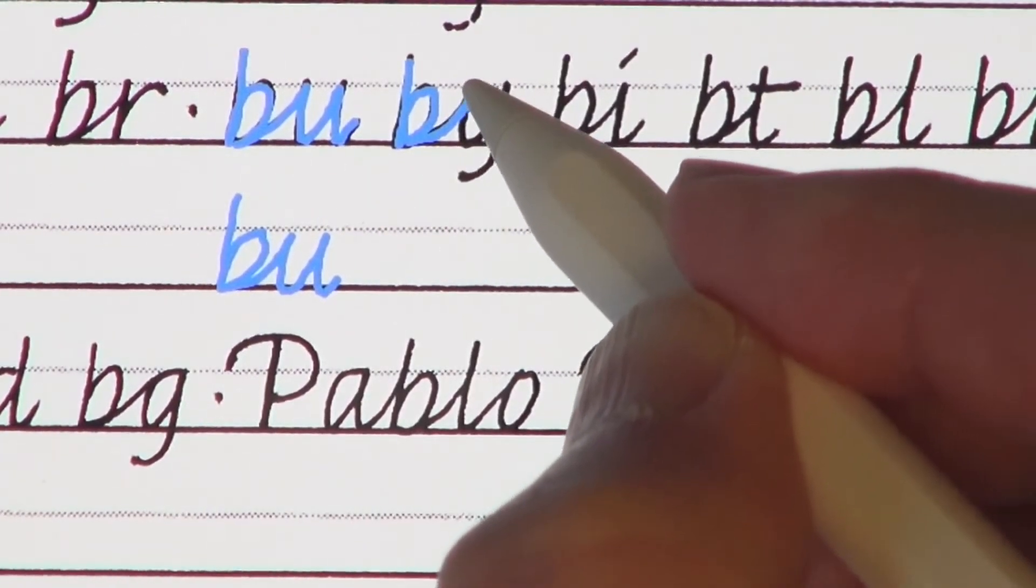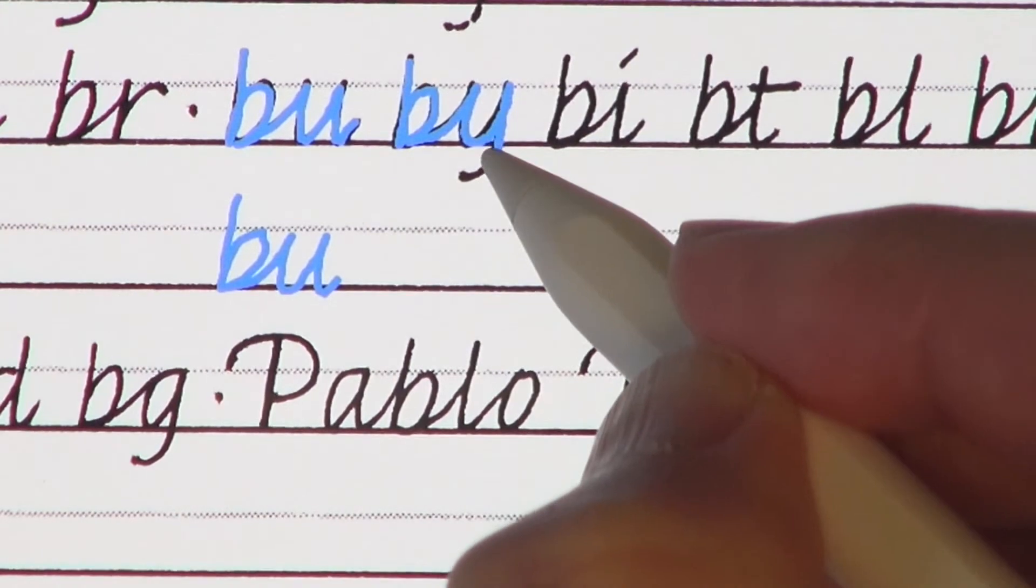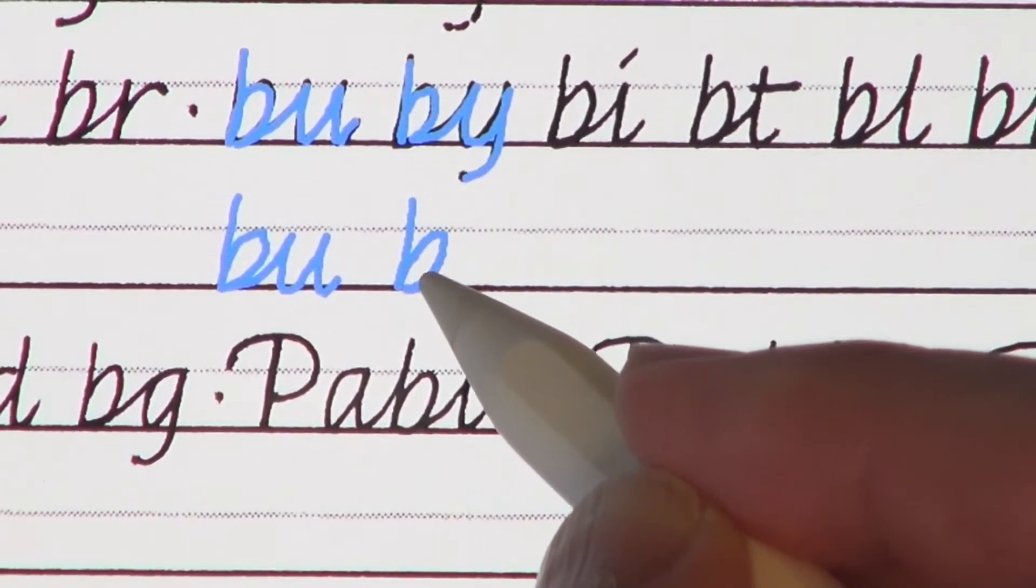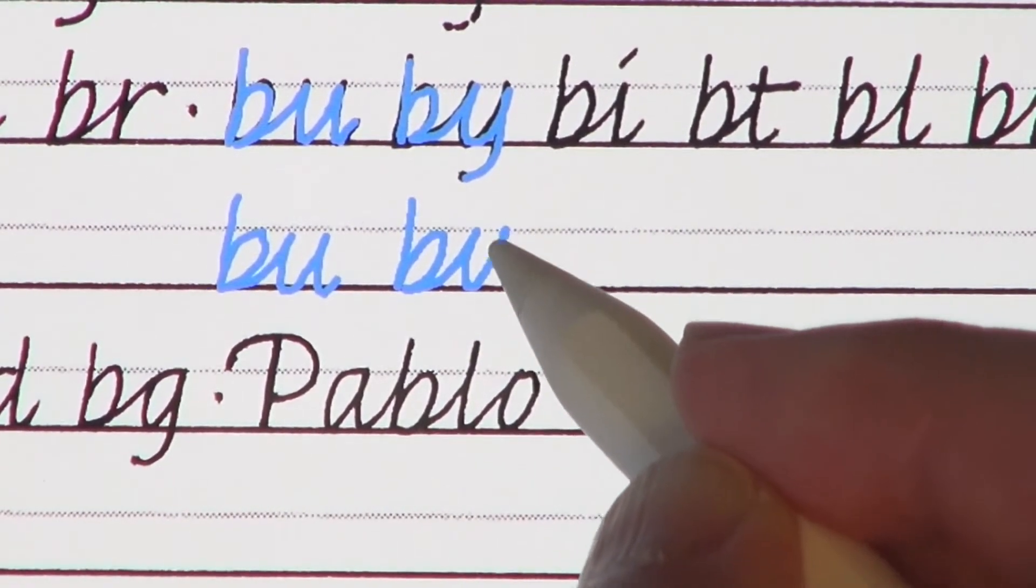When joining out of b, you can retrace that last little horizontal back, then angle up to greet any other letter except lowercase f.